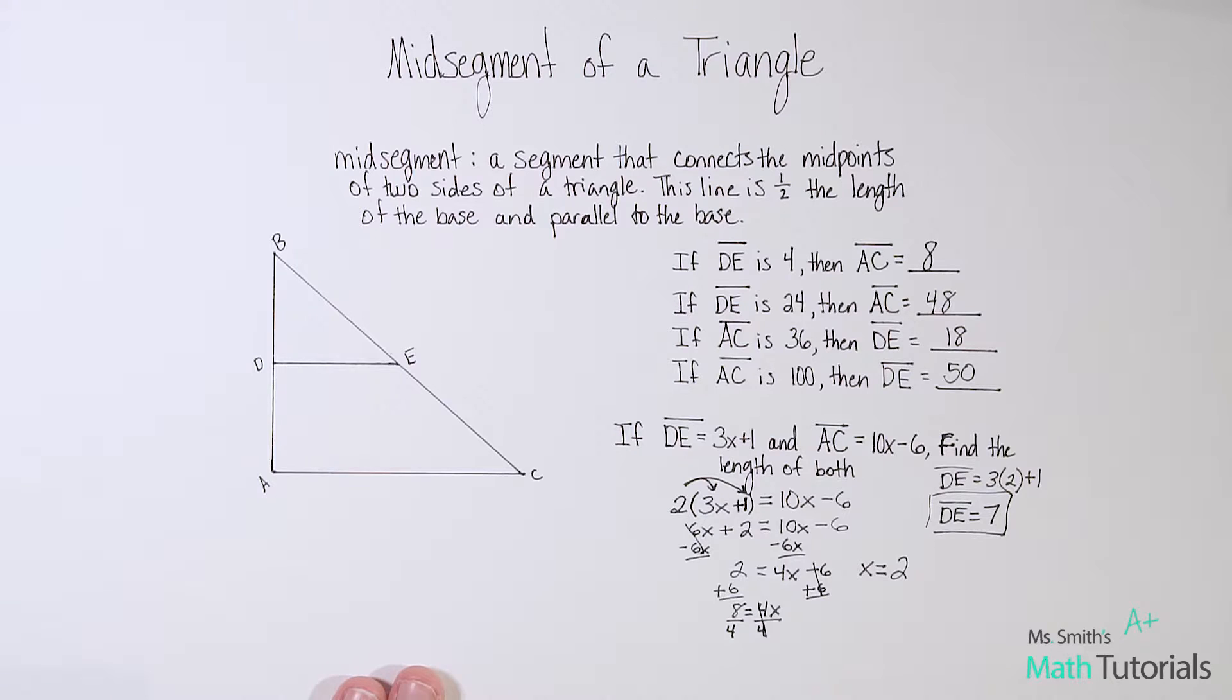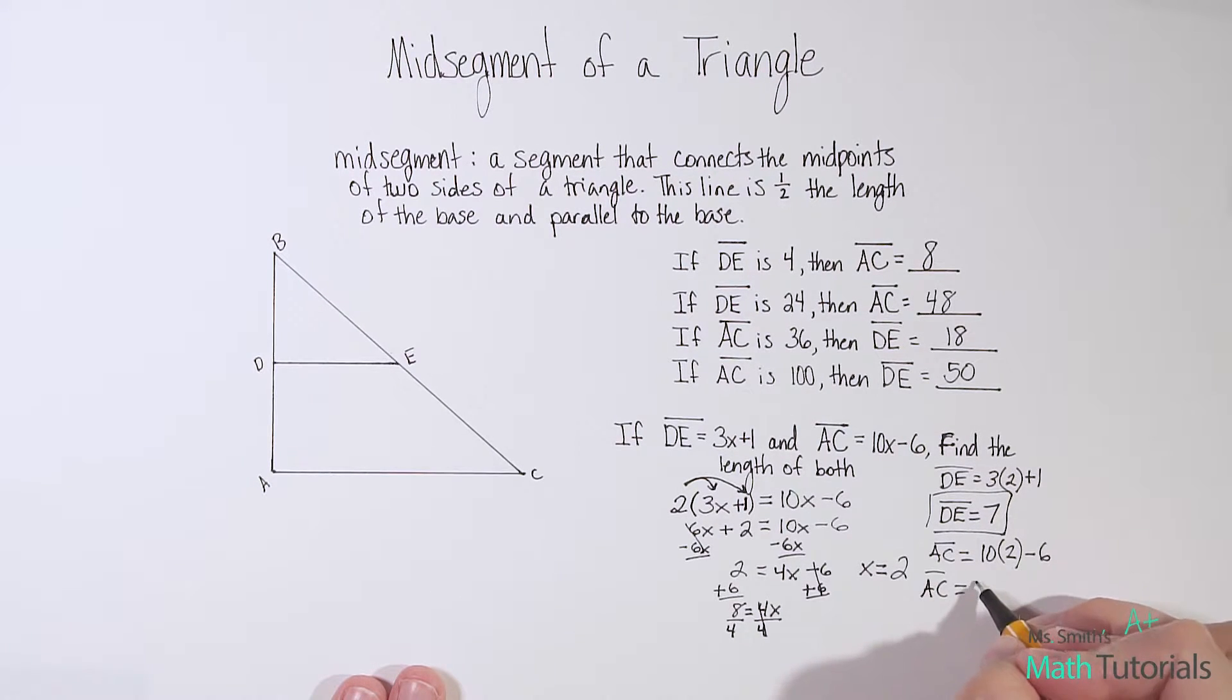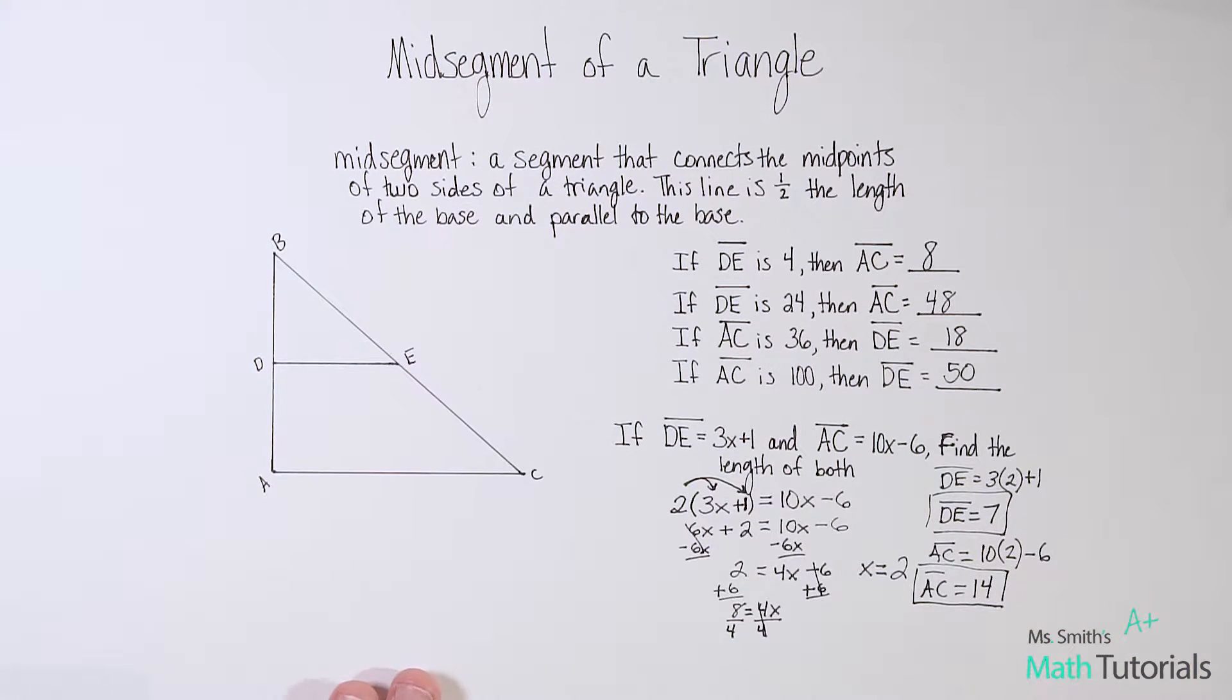Now, knowing my rules about mid-segments, if DE was 7, then AC has to be 7 times 2. It should be 14. But let me just double check with my math just to make sure that I have truly found the correct x. So AC I know is 10 times x. x is 2 minus 6. So in this case, it's 10 times 2 is 20. And 20 minus 6 is 14. So that just confirms DE is 7. AC is going to be 14.